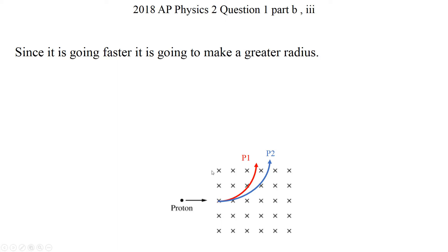You can do this mathematically as well. But I just want to explain it intuitively. And they don't ask you to make any mathematical representation. They just ask you to do a path. So the path of the second proton that is going faster is going to have a greater radius.